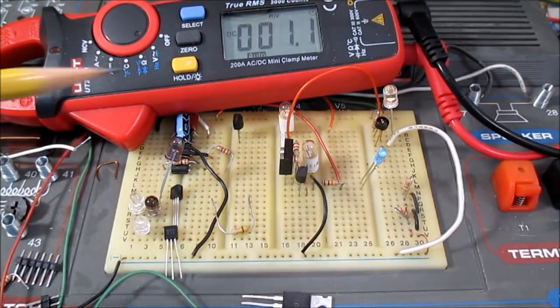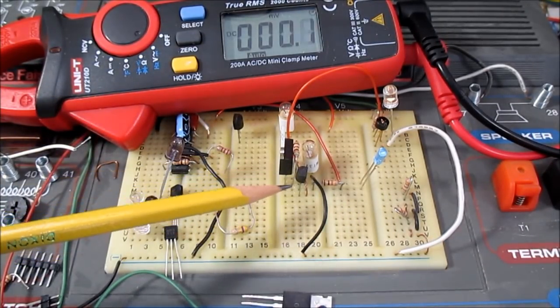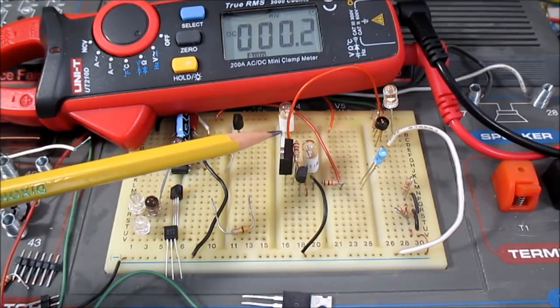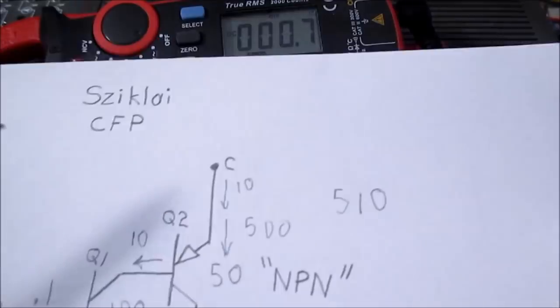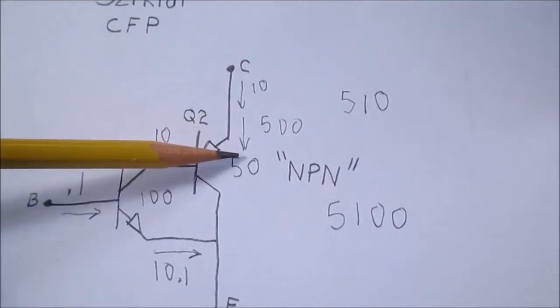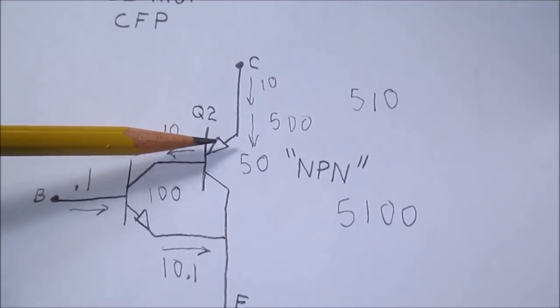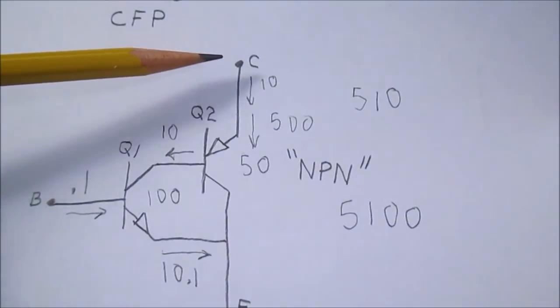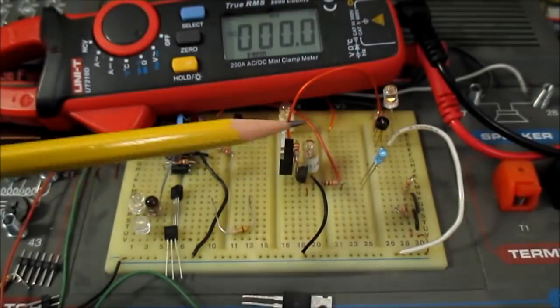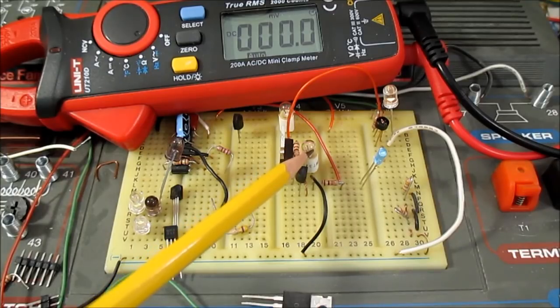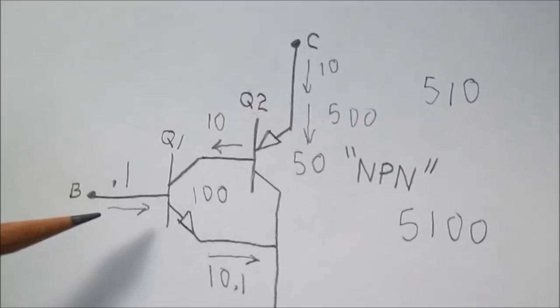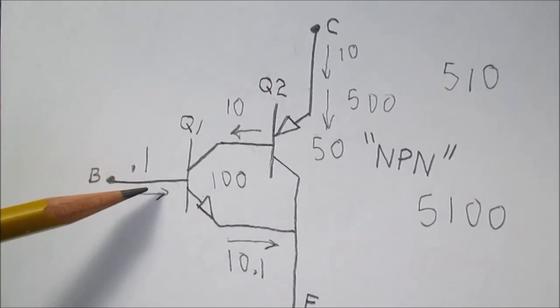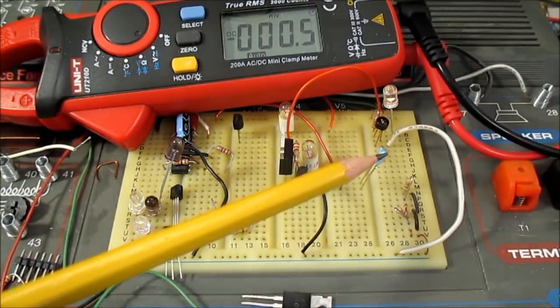Okay, I have a complementary feedback pair circuit set up. This here is Q2. This is Q1. In what I'm calling the collector, actually the emitter of Q2, I guess it's like a quasi-collector. I have this incandescent light bulb. In the base here, I have a 10K resistor and also an LED in series.